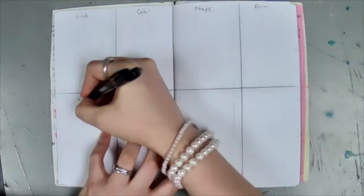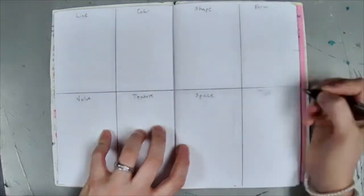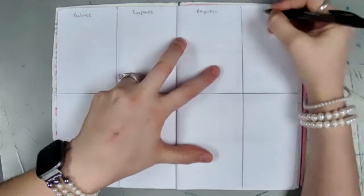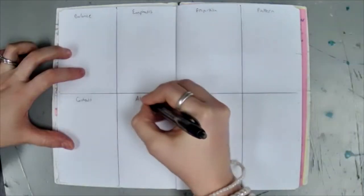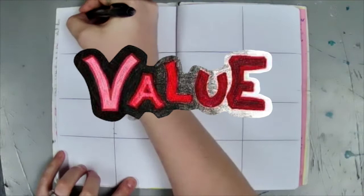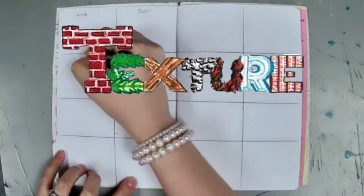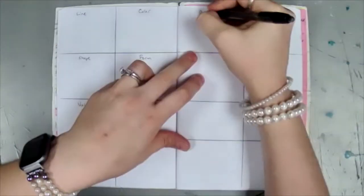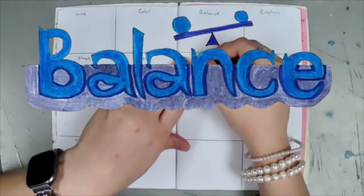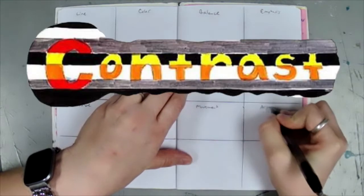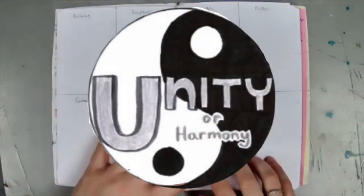When you go to label your grid, you'll want to label these boxes for the elements and principles. The elements boxes are going to be line, color, shape, form, value, texture, space, and type. For the principles, you have balance, emphasis, proportion, pattern, contrast, alignment, movement, and unity.